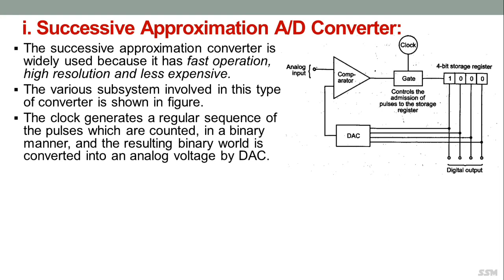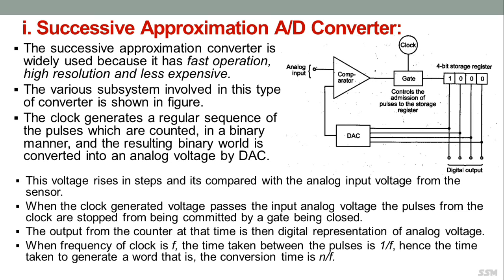The clock generates a regular sequence of pulses, which are counted in binary manner. The resulting binary word is converted to an analog voltage by the DAC. This voltage rises in steps and is compared with the analog input from the sensor. When the DAC voltage passes the input analog voltage, the clock pulses are stopped by the gate closing. The counter output at that time is the digital representation of the analog voltage. For a clock frequency f, the conversion time is n/f.